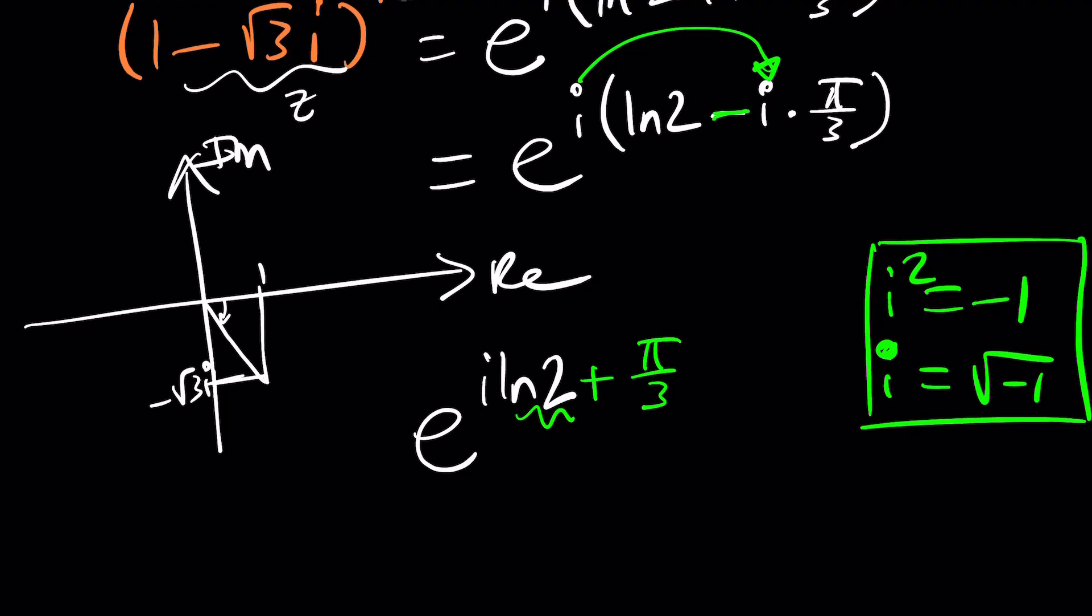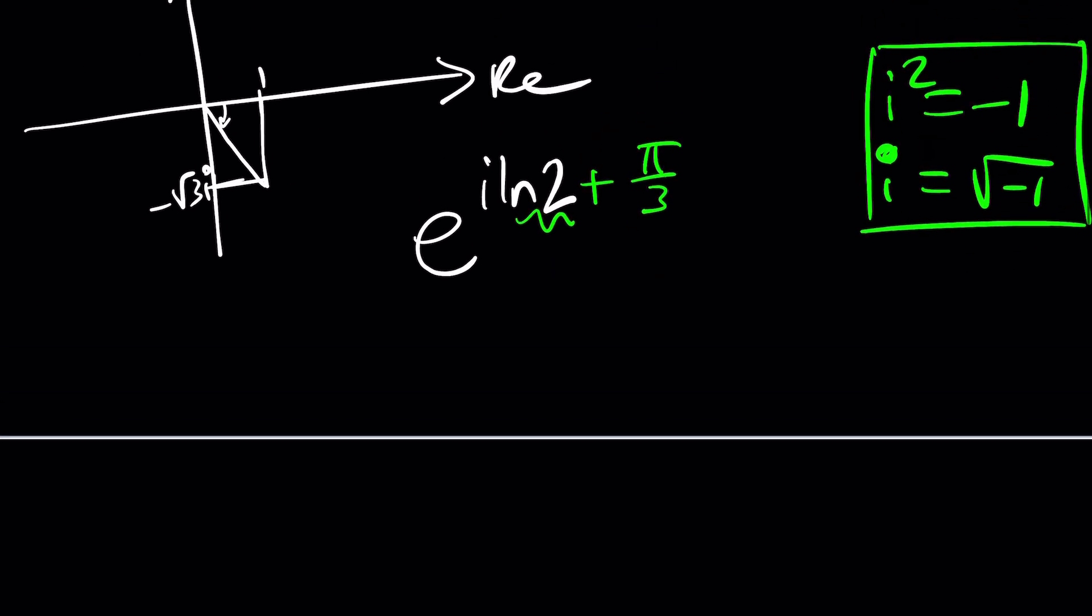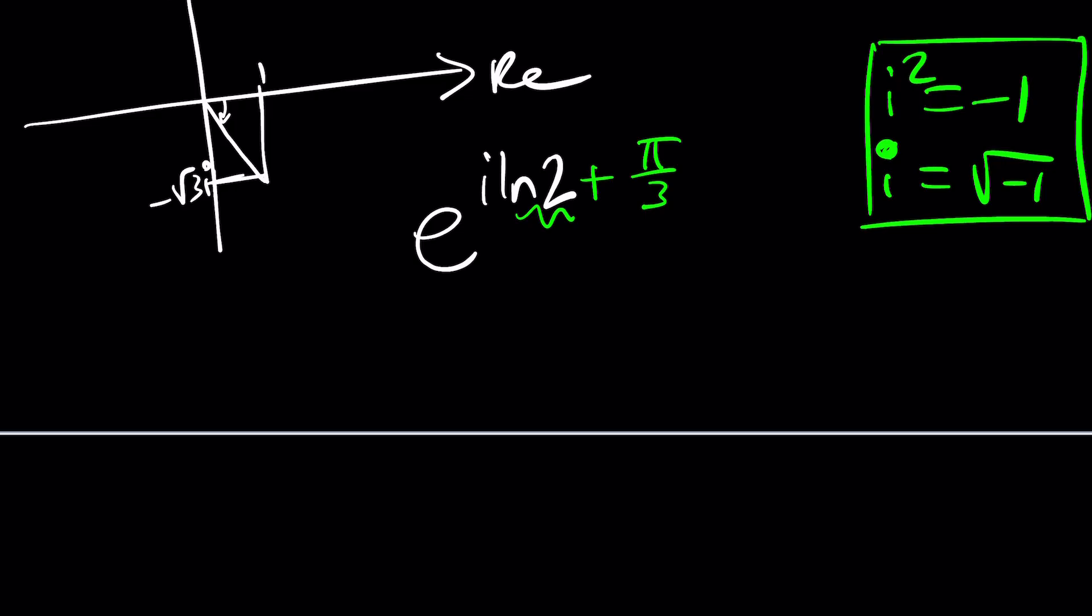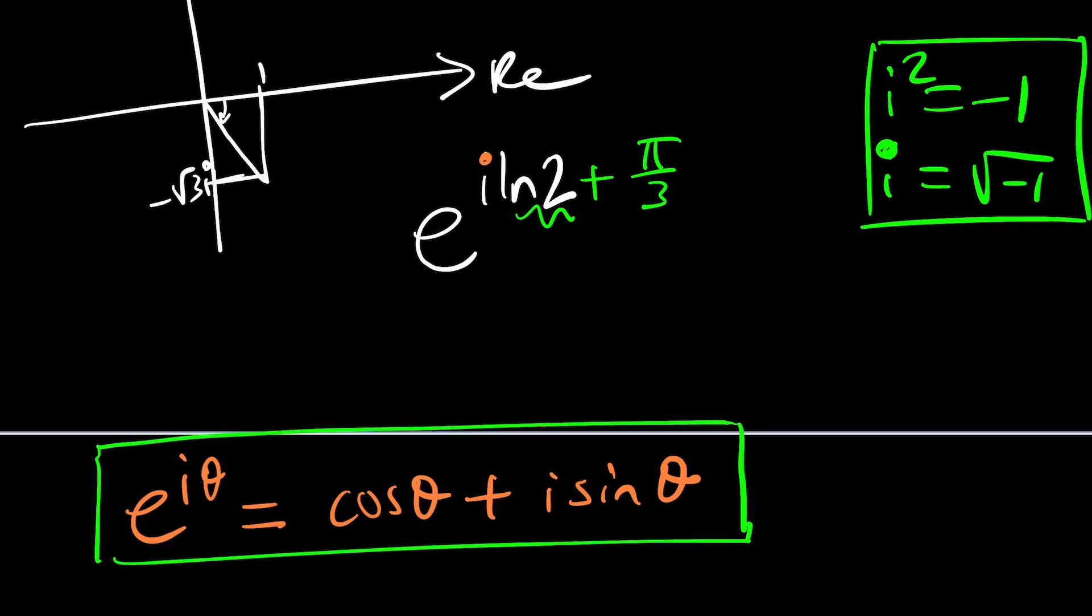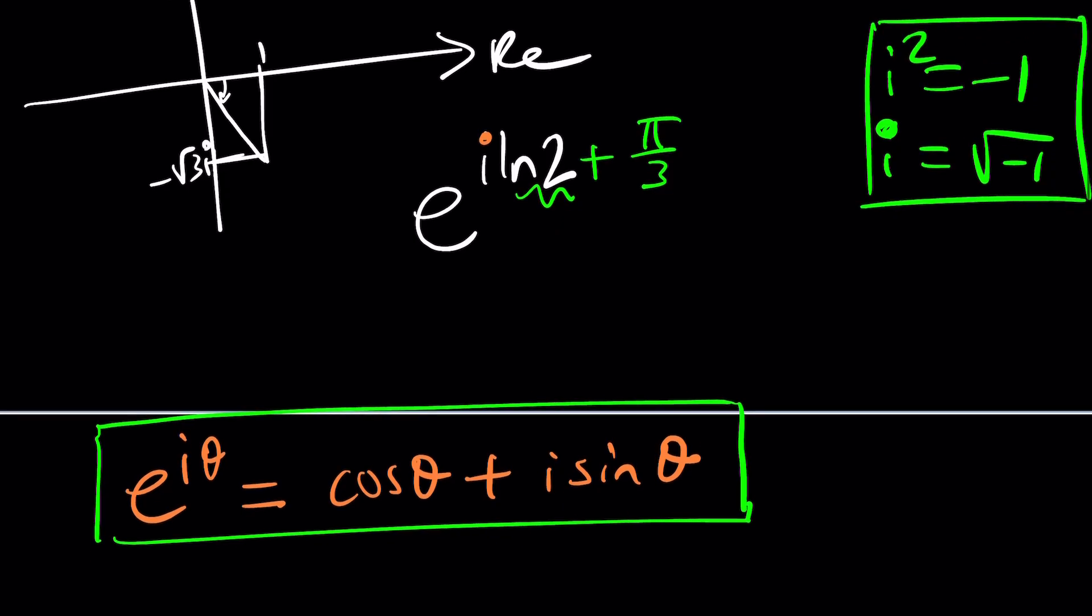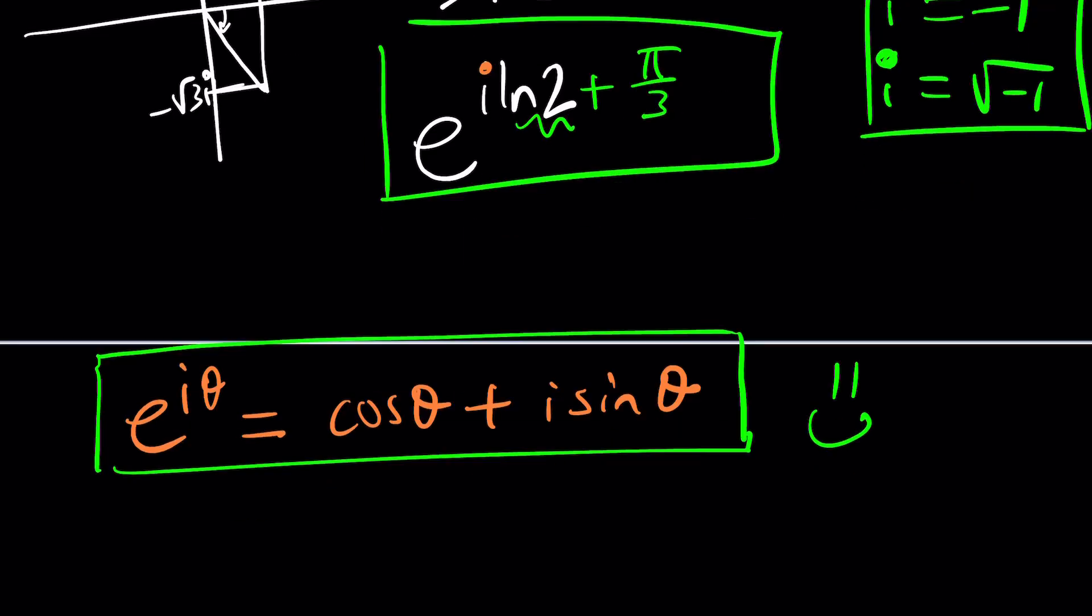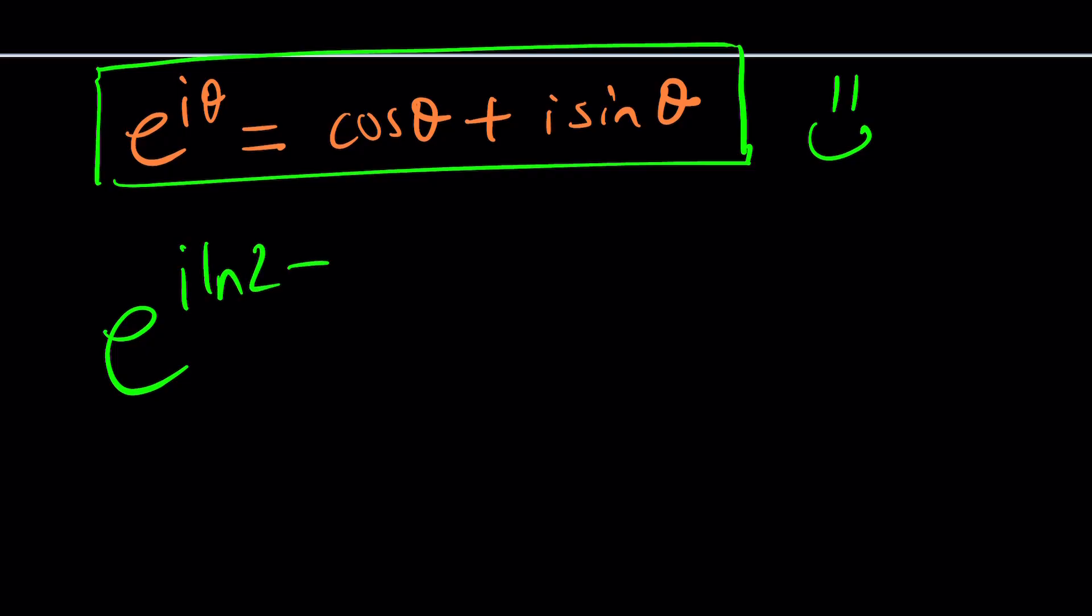Awesome you can leave it at that but what is e to the power i times something? That brings us to Euler's formula. Euler came up with a beautiful formula which gave us the most beautiful equation in math. e to the i theta is cosine theta plus i sine theta. How nice you bring together trigonometry, imaginary numbers, arithmetic, exponentiation. This is Euler's formula and we're going to apply it here. We need to take this thing and rewrite it as e to the power i ln 2 plus pi over 3.